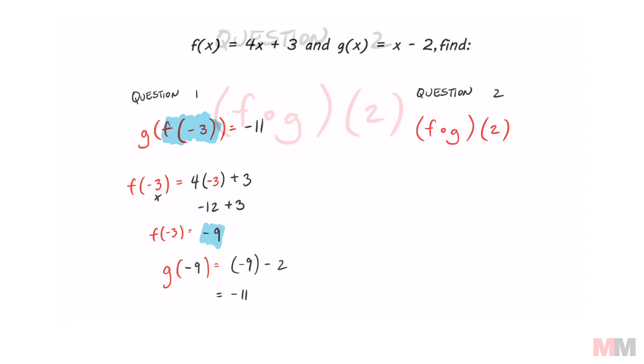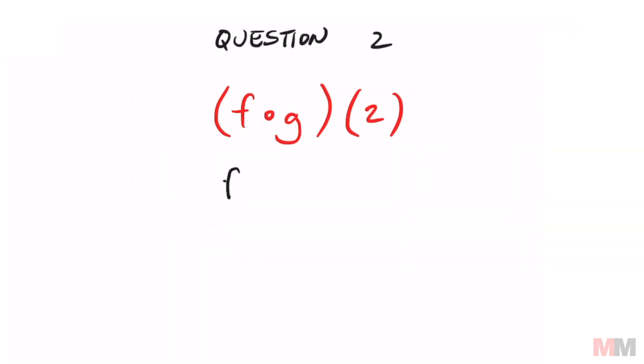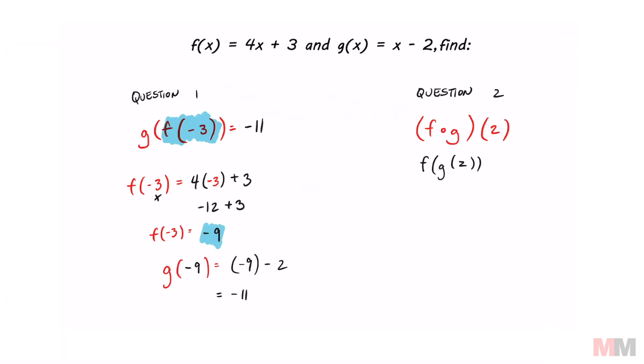When you see it in this way, you just have to write it in the order that you see it. So you're going to put f parentheses g parentheses two. And just to repeat myself, focus on the very inside first. That says g, so we're going to use this function and my input is going to be two.